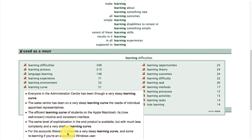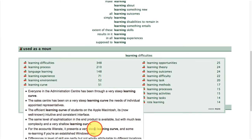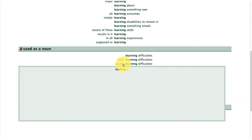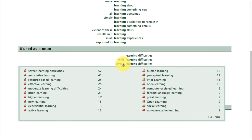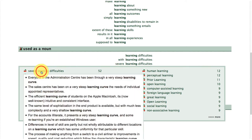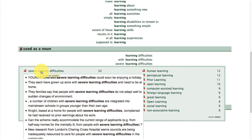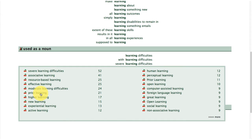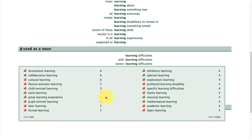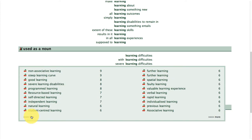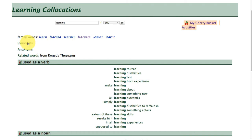For example, 'severe learning difficulties' — this is an adjective plus noun phrase. You get the idea — you can just click through and get more and more examples.